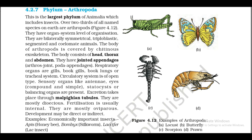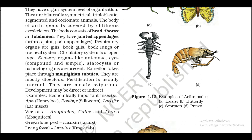4.2.7 Phylum Arthropoda. This is the largest phylum of Animalia, which includes insects. Over two-thirds of all named species on Earth are arthropods (Figure 4.12). They have organ system level of organization. They are bilaterally symmetrical, triploblastic, segmented, and coelomate animals. The body of arthropods is covered by a chitinous exoskeleton. The body consists of head, thorax, and abdomen. They have jointed appendages (Arthropoda: arthros — joint, poda — appendages).